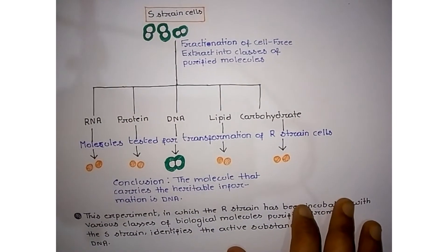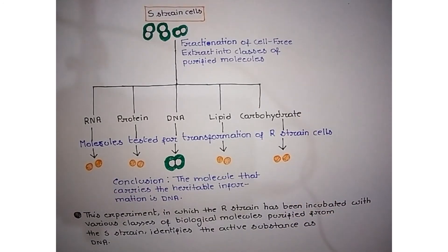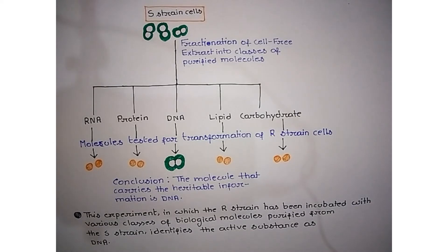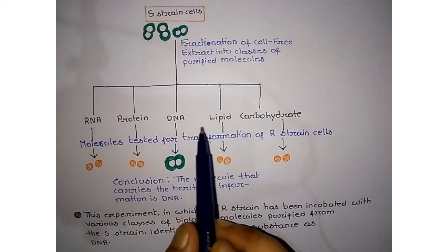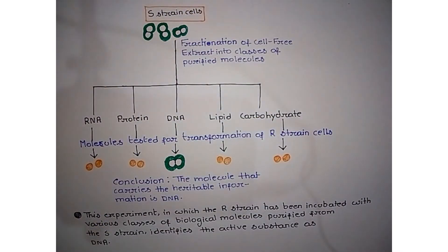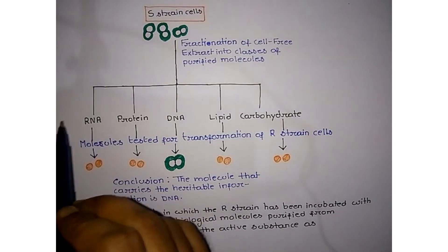In the second experiment, we determine which particular molecule helps in the transformation of R-strain to S-strain and carries the information to daughter cells. We collect molecules such as RNA, protein, DNA, lipid, and carbohydrate from the S-strain cell and incubate each of them individually with R-strain cells.